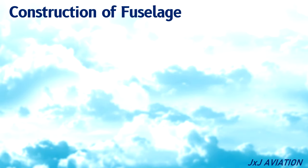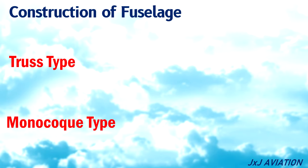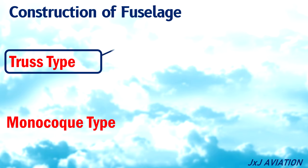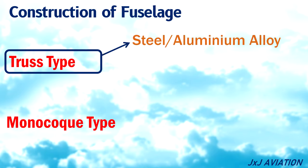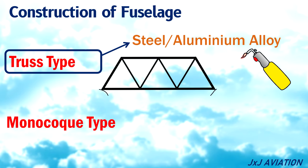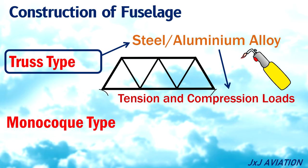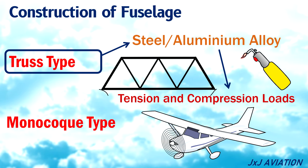Construction of a fuselage. There are two types of fuselage constructions: truss type and monocoque type. A truss type consists of steel or aluminium alloy tubes which are welded together. All the tubes carry tension and compression loads. This type of construction can be seen on small single engine aircraft.